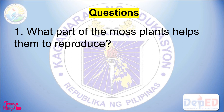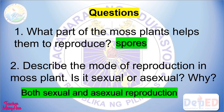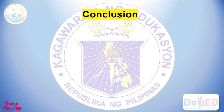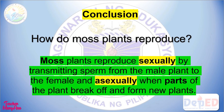What part of the moss plants helps them to reproduce? Spores. Describe the mode of reproduction in moss plants — is it sexual or asexual? Why? Both sexual and asexual reproduction. How do moss plants reproduce? Moss plants reproduce sexually by transmitting sperm from the male plant to the female, and asexually when parts of the plant break off and form new plants.